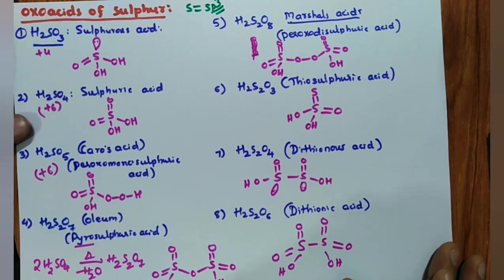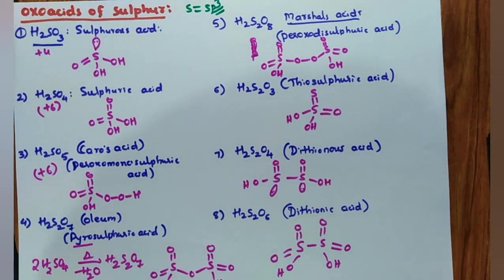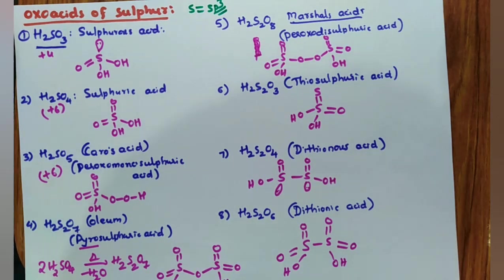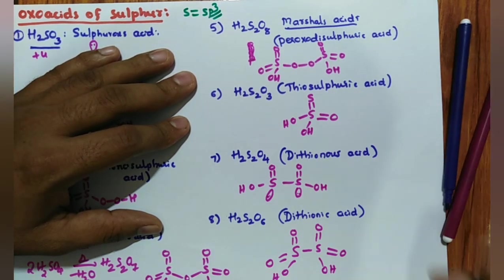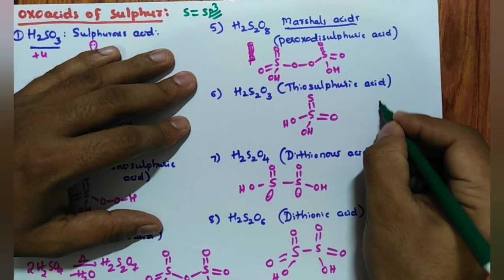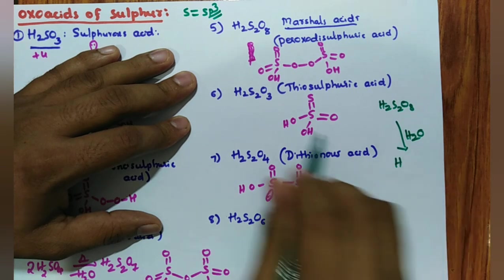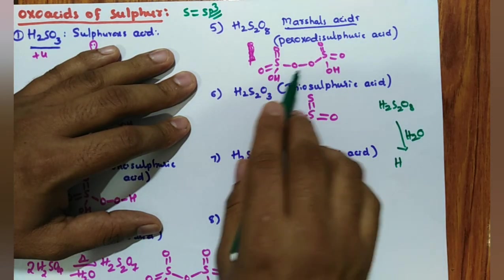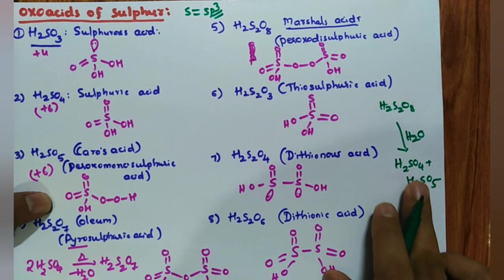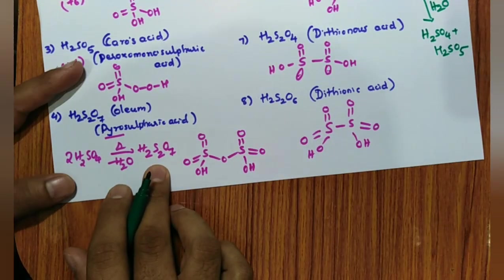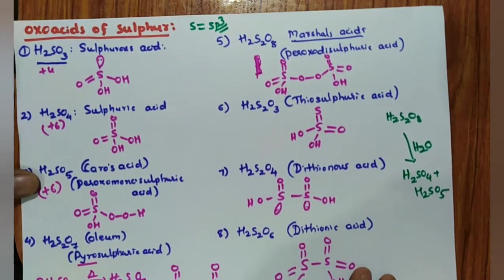Reducing nature of sulfur acids: there is no S–H bond, but H₂SO₄ and H₂SO₃ (sulfurous acid) can act as reducing agents. Important NEET question: what is the product when Marshall's acid undergoes hydrolysis? The O–O peroxide linkage undergoes cleavage; H₂S₂O₈ on hydrolysis gives H₂SO₄ and H₂SO₅ (peroxomonosulfuric acid). Then H₂SO₅ further undergoes hydrolysis to give two moles of sulfuric acid.